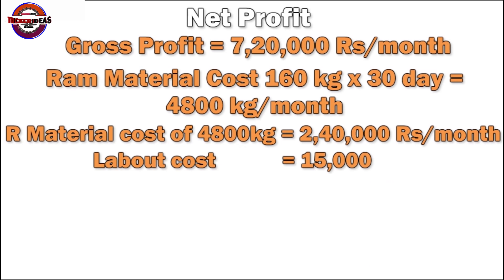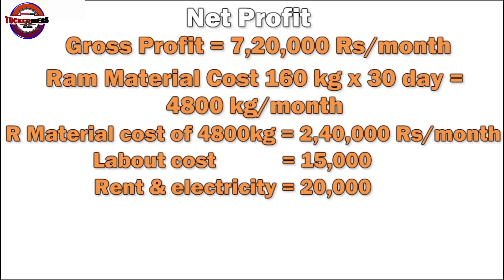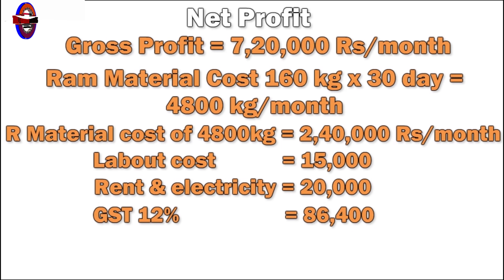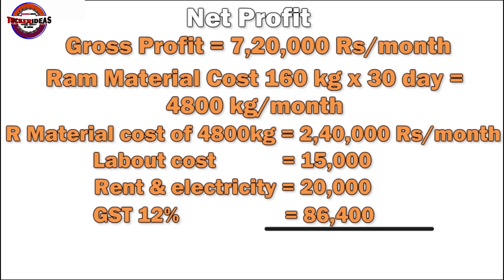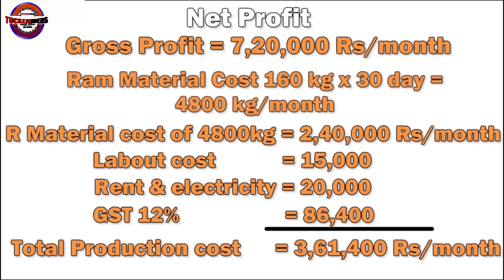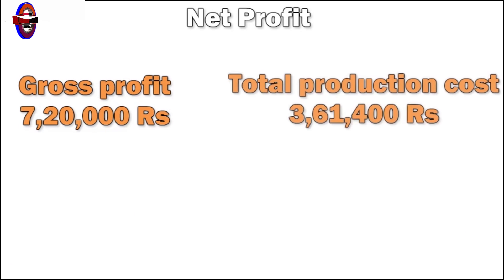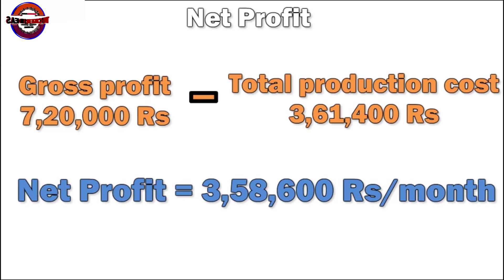The labor cost is around 1.5. The electricity cost is 80,000 rupees. The cost includes GST at 0.75. The cost of it is 3,000 rupees. The total production cost gives us a net profit. This is a maximum sale of 80,000 rupees profit.